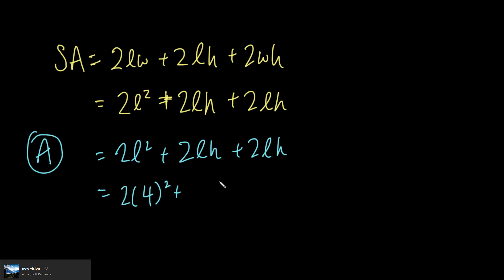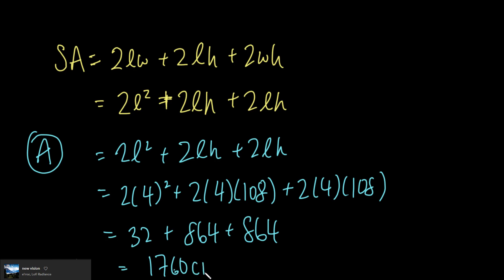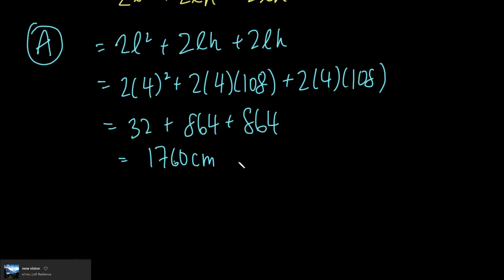So we can say it's 2 times 4² plus 2 times 4 times 108 plus 2 times 4 times 108. We can take our calculator and throw that all in. 4² is 16 times 2 is 32 plus 2 times 108 is 216 times 4, which gives us 864. And this is also 864, which gives us a total of 864 plus 864 plus 32 equals 1760 centimeters. This is for our surface area. We're looking for the least surface area, so that's option A.